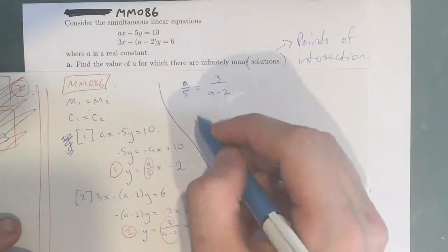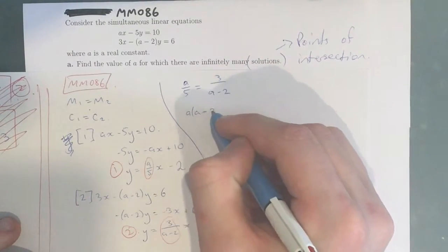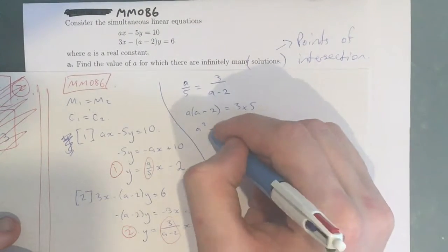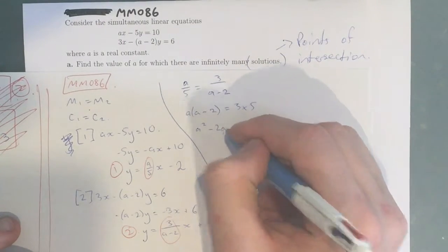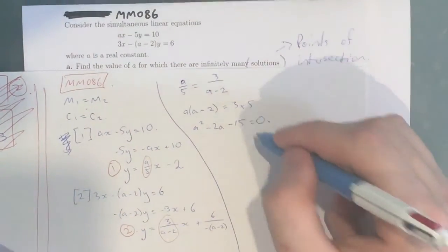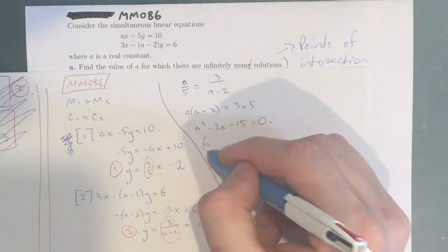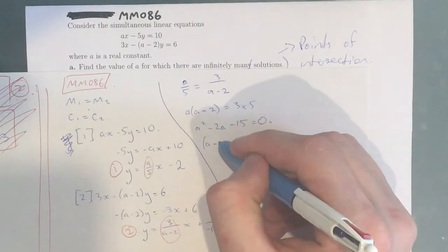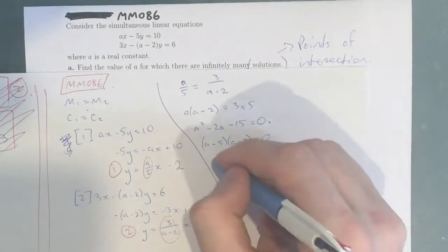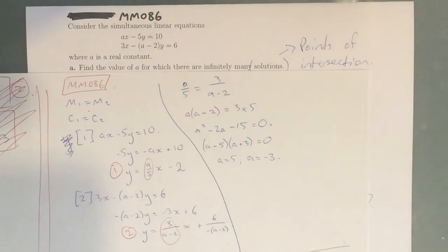We then cross-multiply and get A times (A minus 2) equals 3 times 5. So we get A squared minus 2A minus 15 equals 0 — I've skipped a step there but I'm sure you can see what I've done. That factorises to (A minus 5)(A plus 3) equals 0, which means A equals 5 and A equals negative 3.